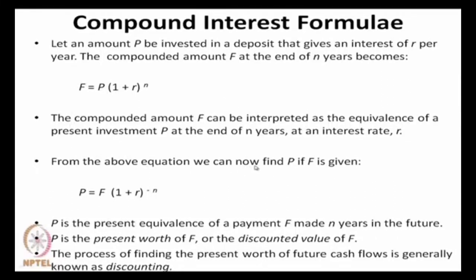From the above equation, we can find out what P is related to F. P is equal to F multiplied by (1 + R) to the power minus n. So this says that if somebody is giving me 100 rupees 2 years hence, its equivalence today is much less — because it is divided by (1 + R)^n. If R is 0.1, then it is 1.1 squared, which means 100 divided by 1.1 squared — by that amount the value of P will reduce. So P is the present equivalence of a payment F made n years in the future. Normally we say P is the present worth of F, or the discounted value of F.